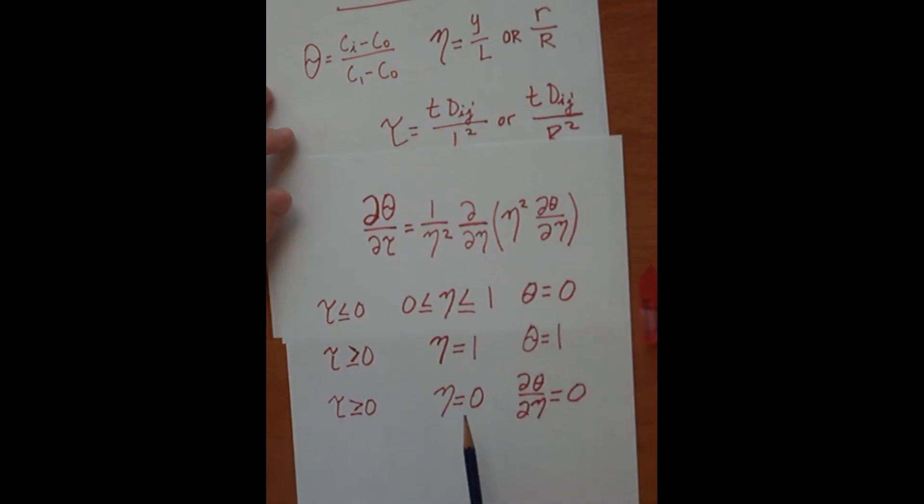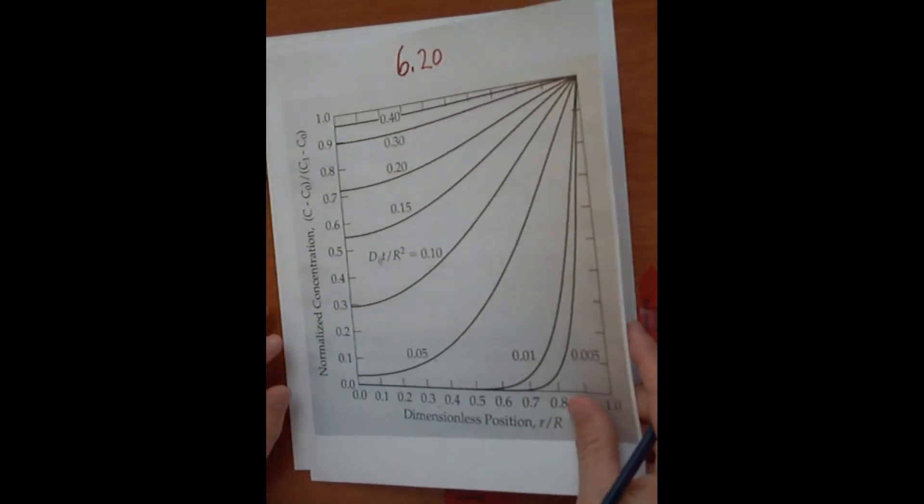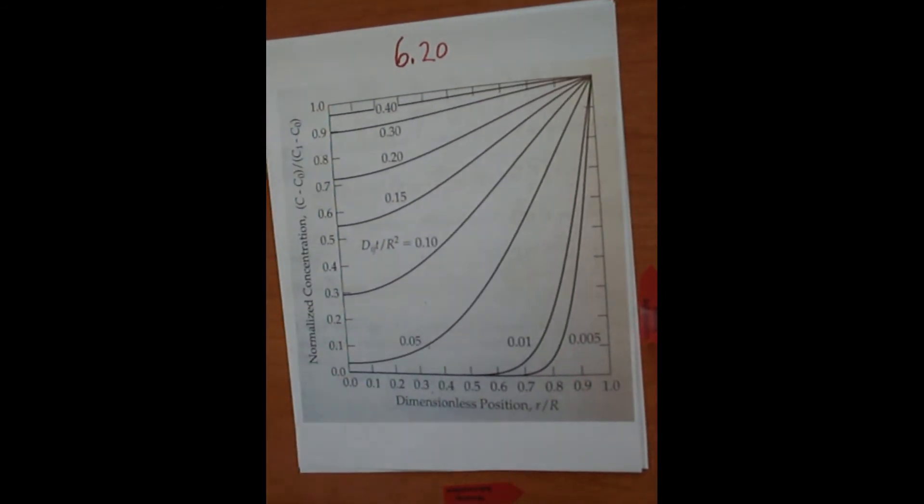And so you can see that they are very similar as the ones in the slab, just that we're now dealing with the different geometry. The non-dimensionalized concentration is shown in graphical terms, and that is Figure 6.20 in the book. Same thing as before. As you can see, as time increases, the lines get more horizontal, showing that the concentration throughout the sphere is becoming uniform as we enter the sphere to the center of the sphere.